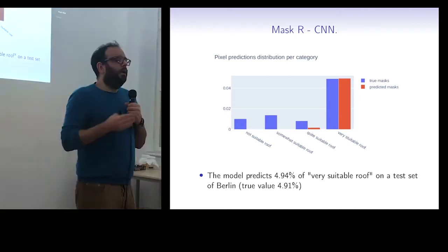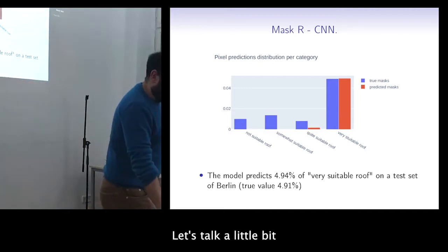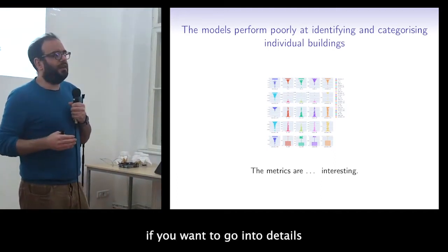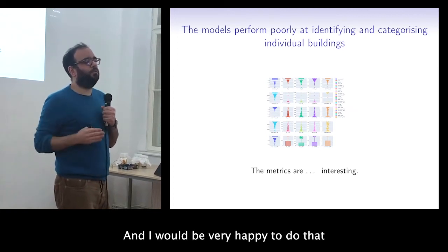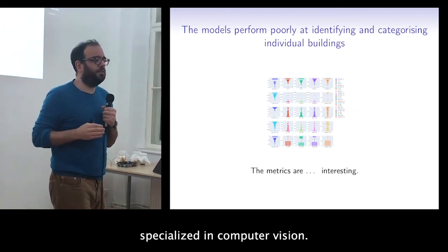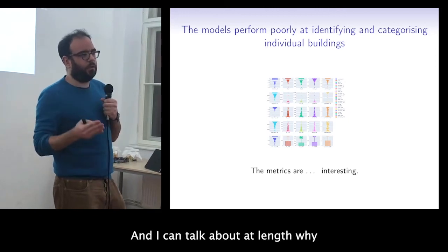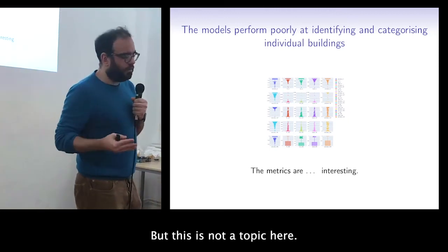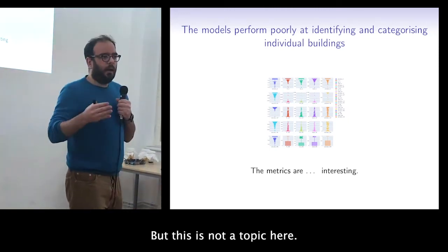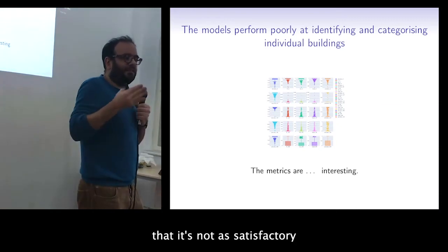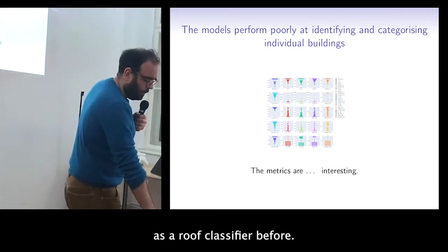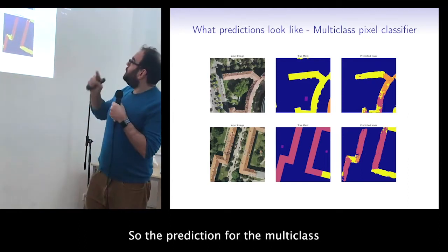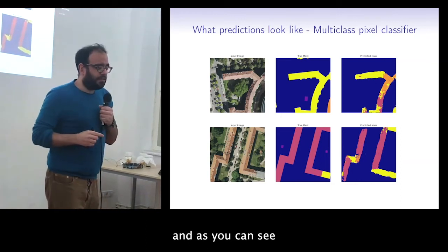Regarding metrics more broadly: if you want to go into the details I'm happy to discuss that with someone specialized in computer vision, but the metrics for the lower categories are simply bad. I can talk at length about why and where we are failing, but the bottom line is it's not as satisfactory as the roof classifier.